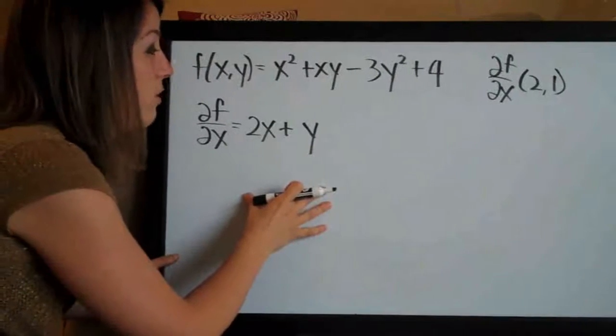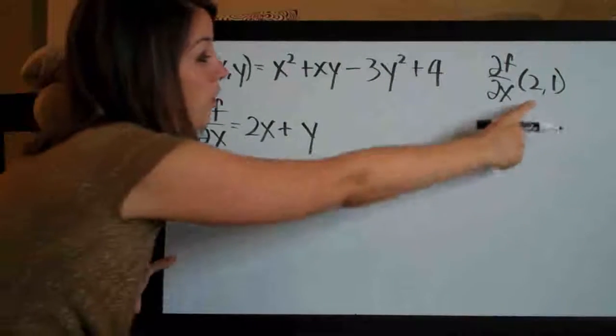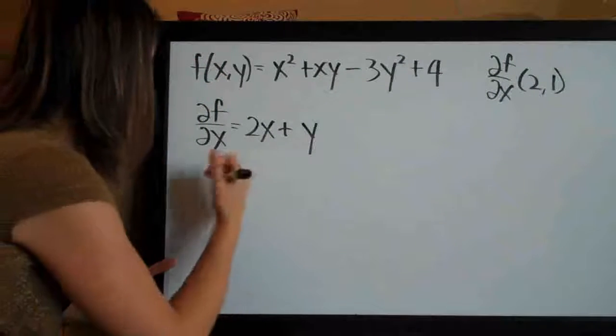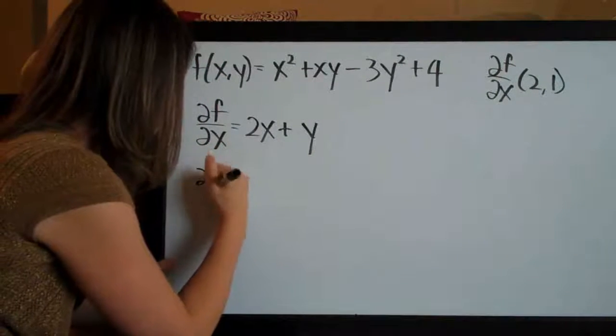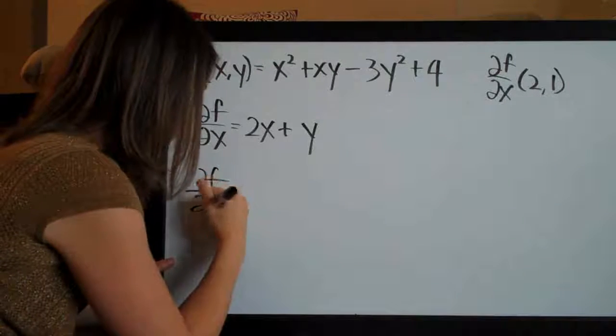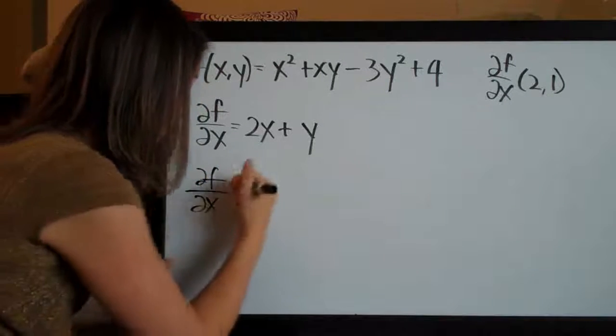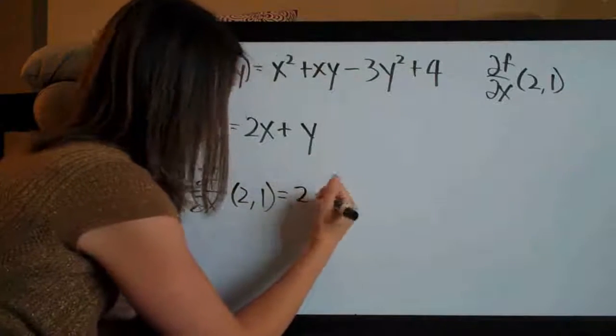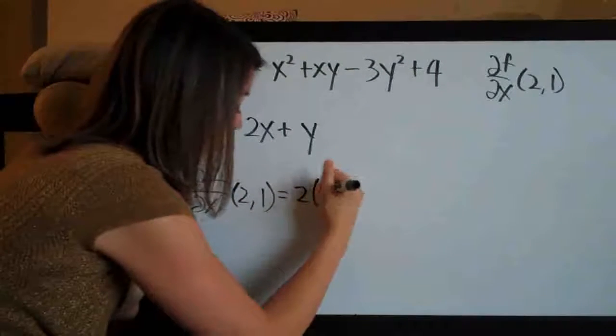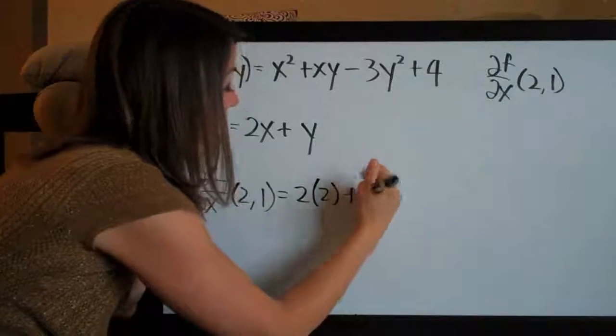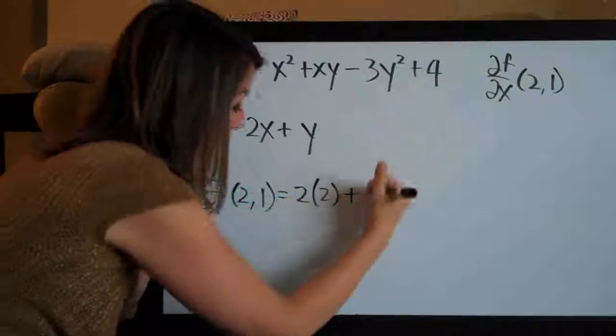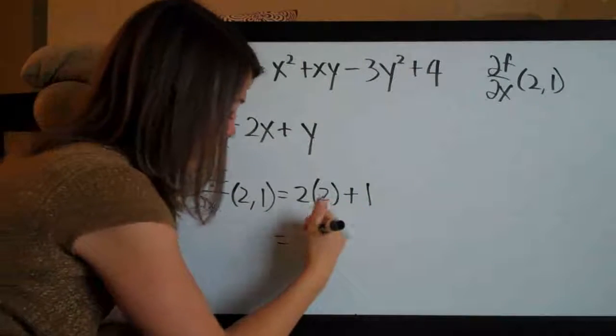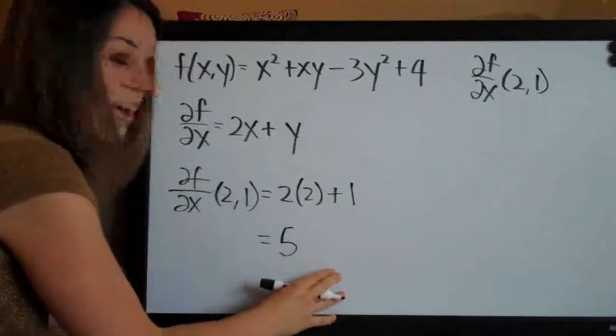So now that we've computed the first order partial derivative, we can go ahead and plug in the point (2,1), plugging in 2 for x and 1 for y. The notation of that of course looks like this. Partial derivative of f with respect to x at the point (2,1) equals 2. We're plugging in 2 for x so times 2 plus 1. 2 times 2 is 4 plus 1 is 5 and 5 is our final answer.